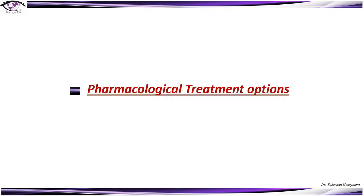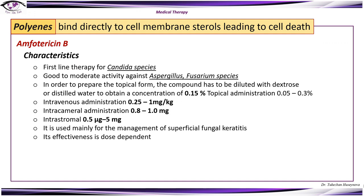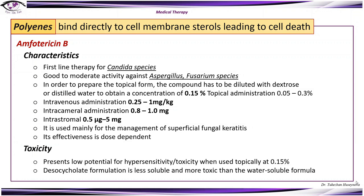Polyenes bind directly to cell membrane sterols, leading to cell death. Amphotericin B is the primary example — it is a first-line therapy for Candida species and has good to moderate activity against Aspergillus and Fusarium. To prepare the topical form, it must be diluted with dextrose or distilled water to a concentration of 0.15%. It is mainly used for superficial fungal keratitis and its effectiveness and toxicity are both dose-dependent; at or below 0.15%, toxicity is reduced.